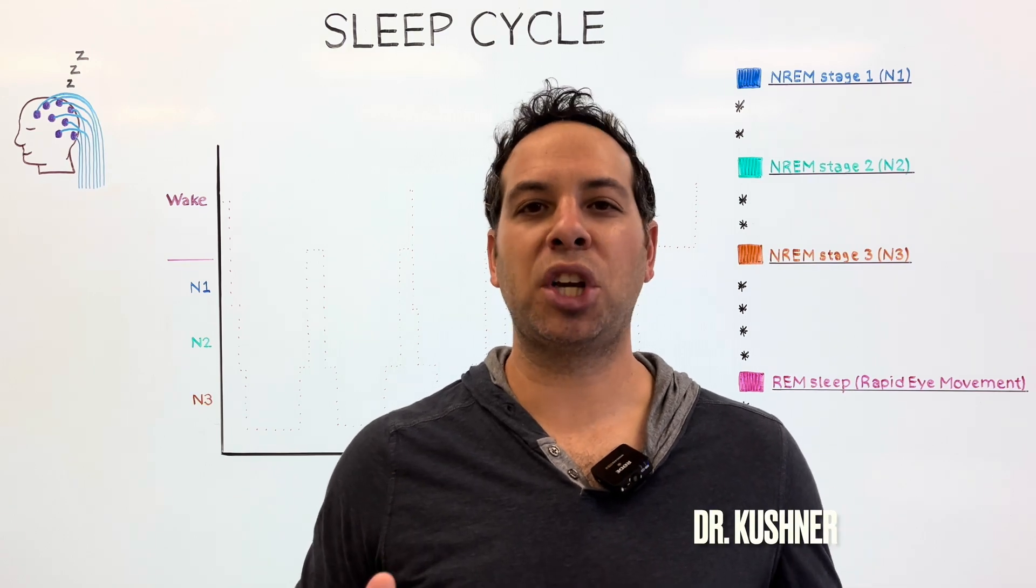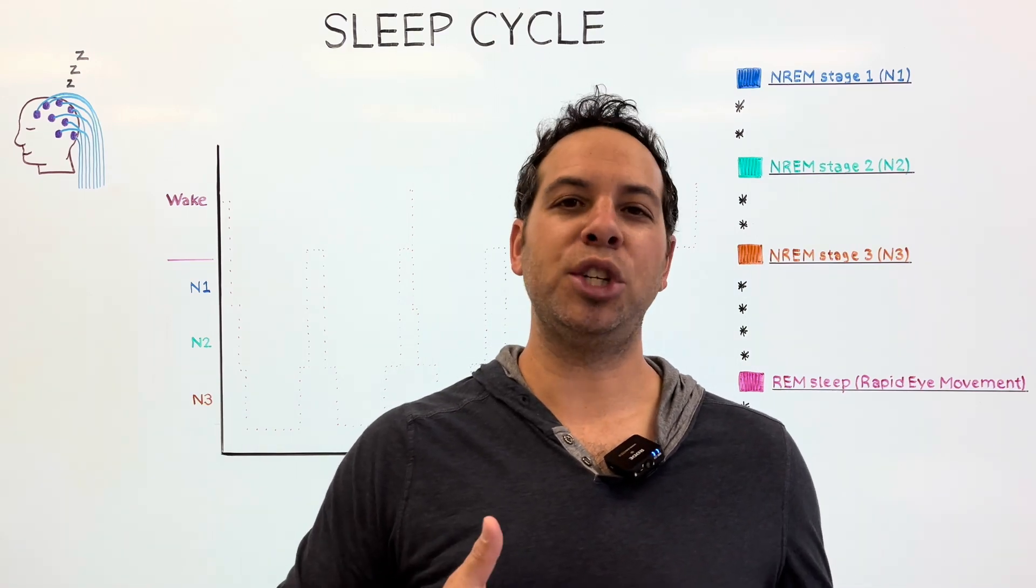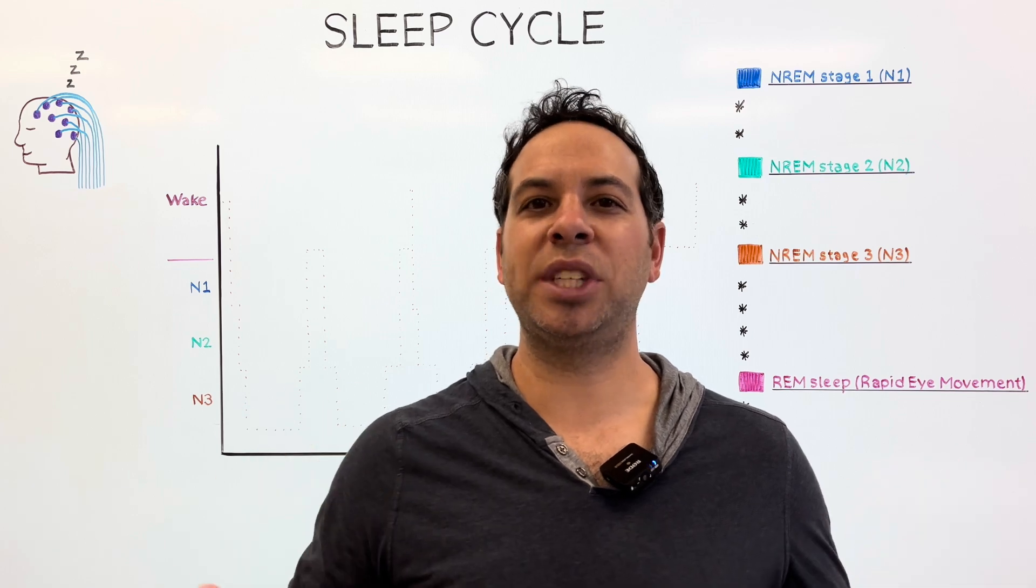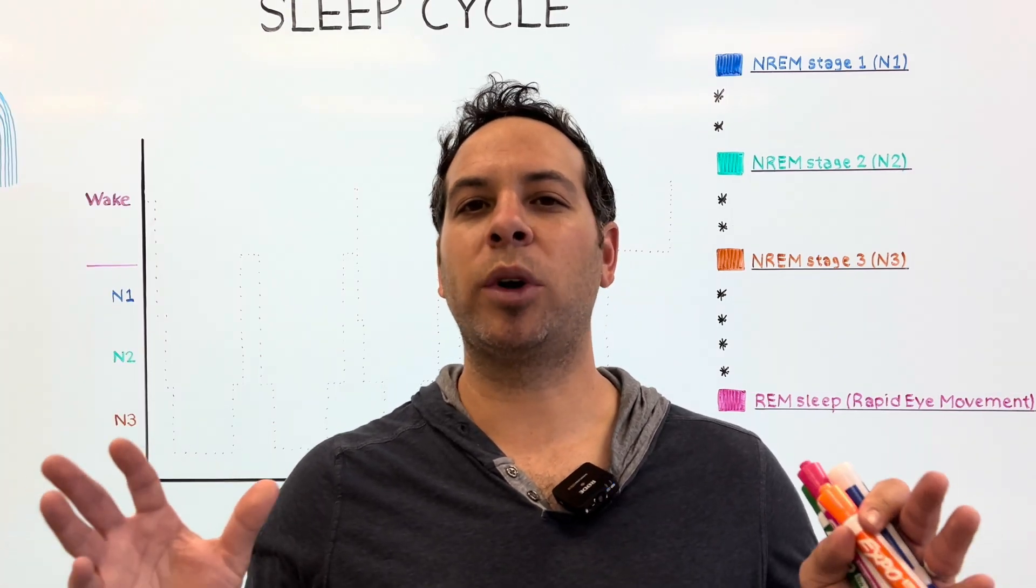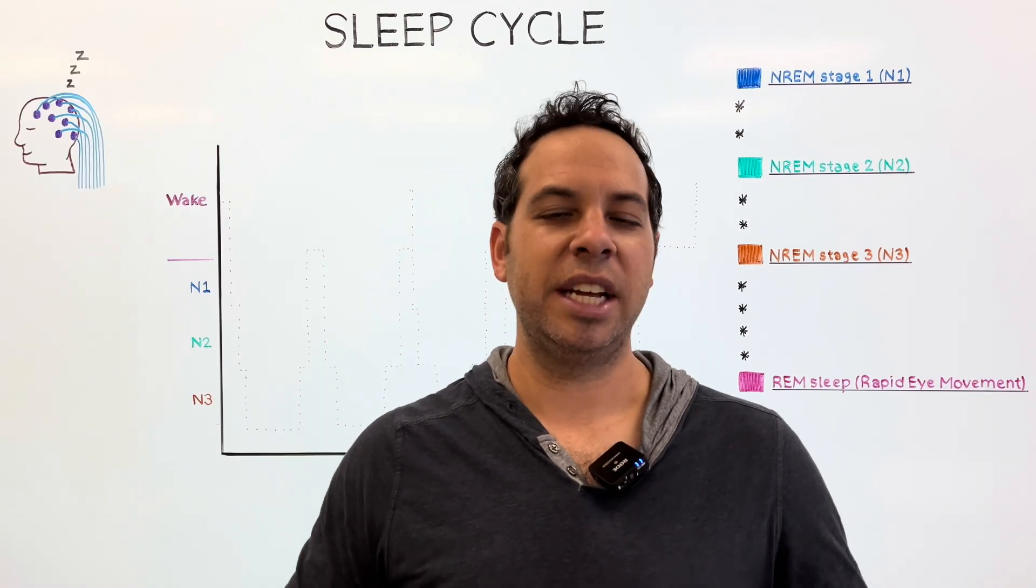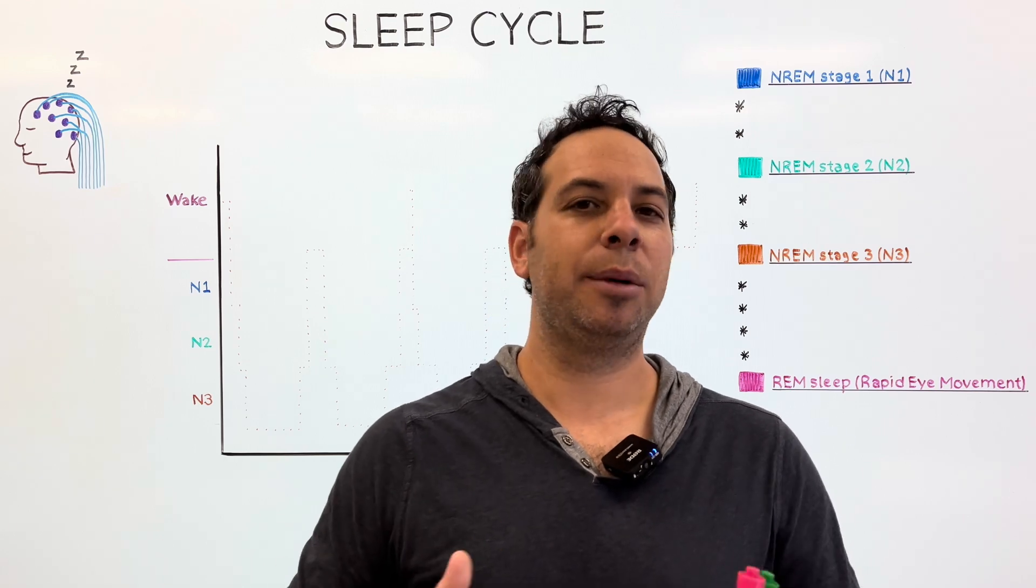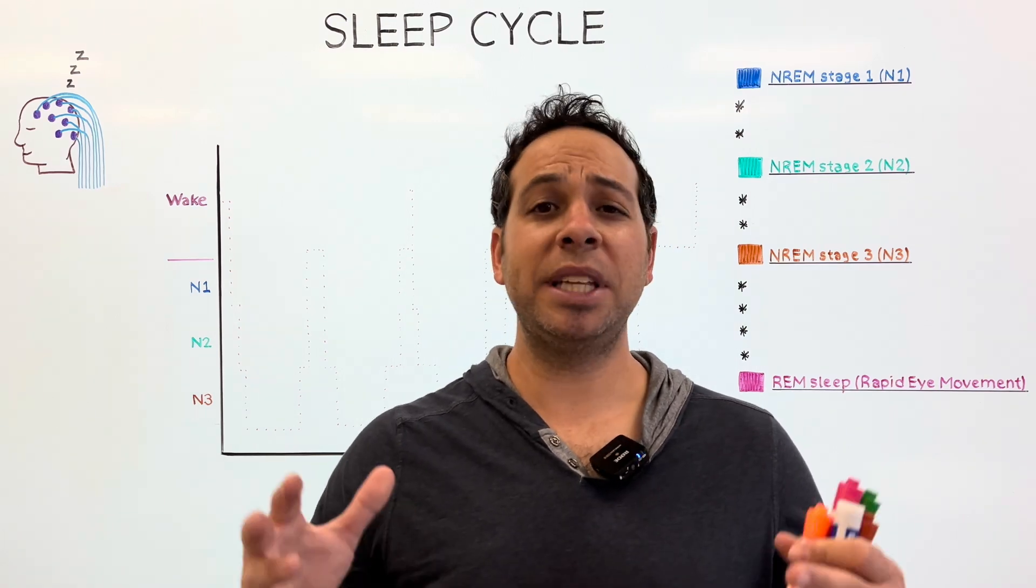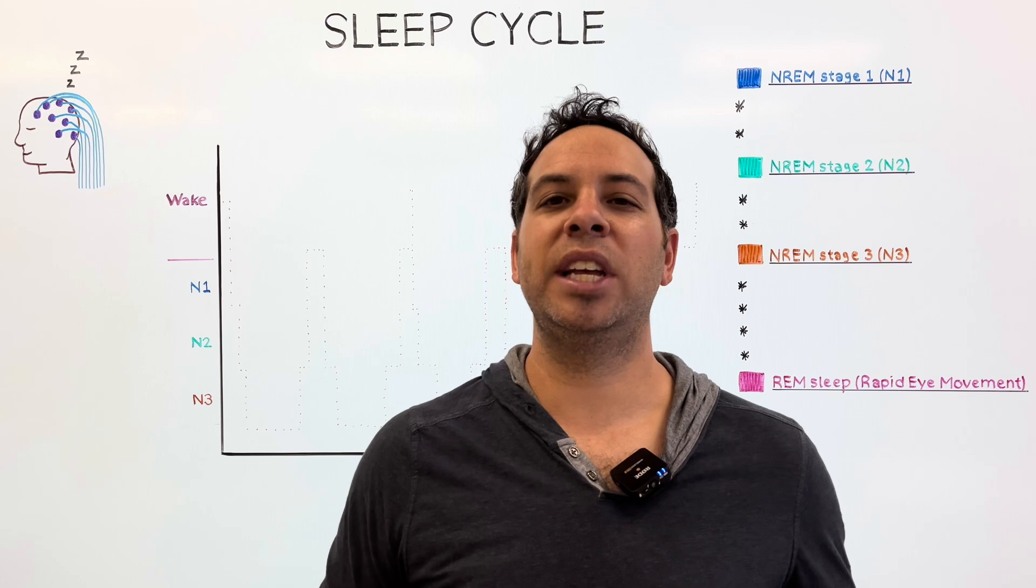It might appear as if the brain is shut off when you're sleeping. You lay down, you go to sleep, you wake up, as if nothing interesting has happened. Yet in reality, this is one of the busiest periods for your brain. It's fluctuating between different stages.